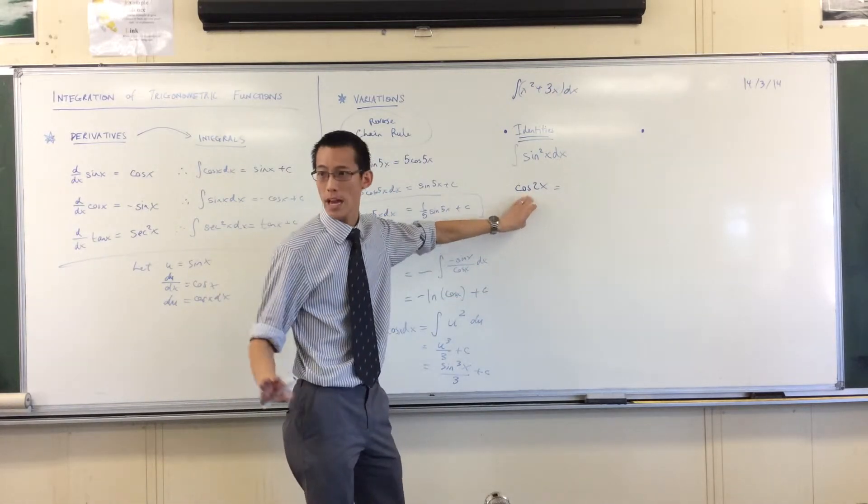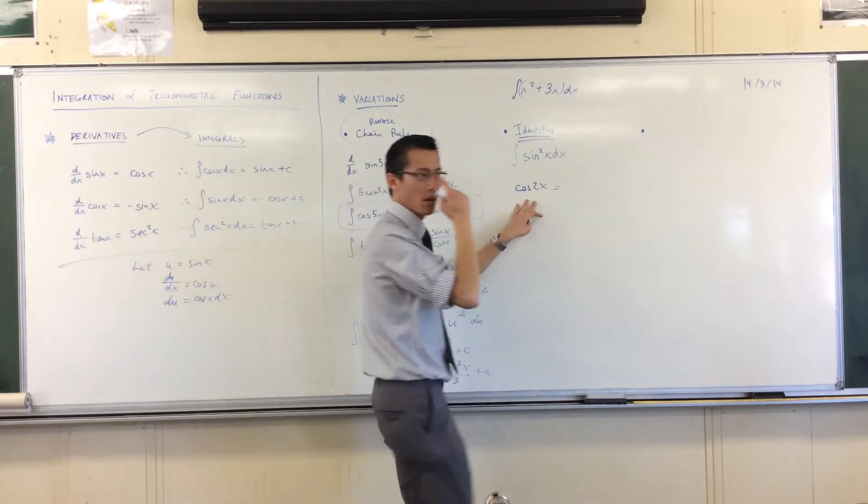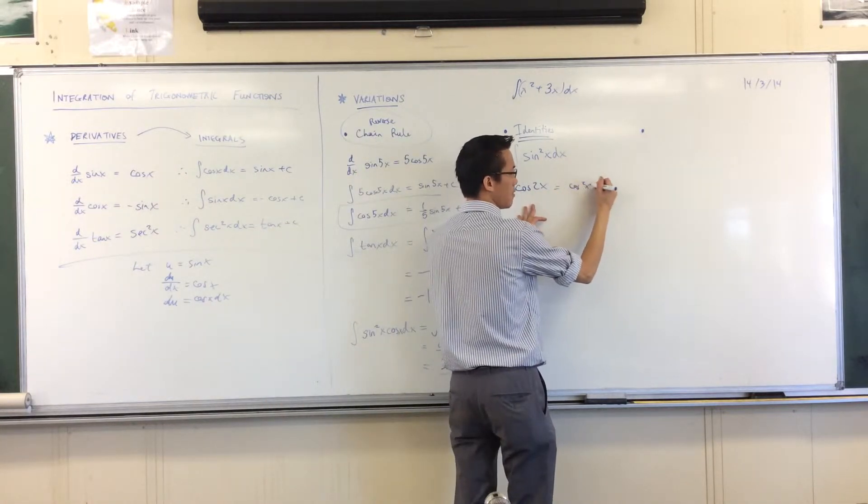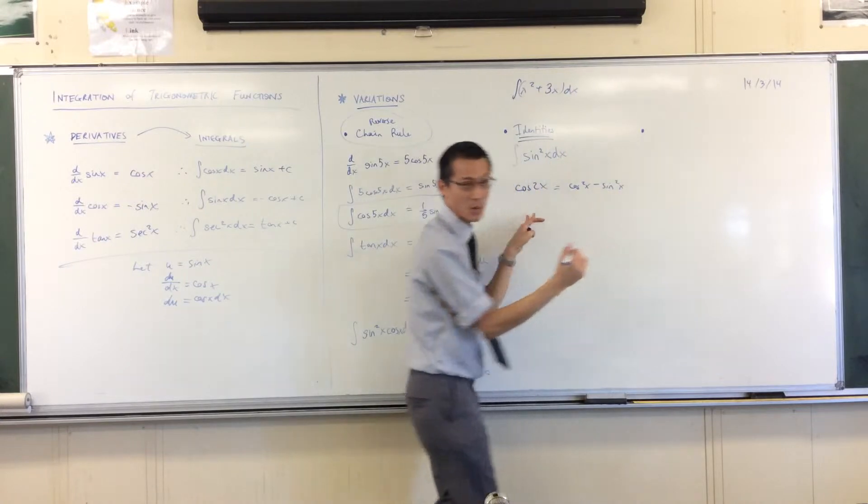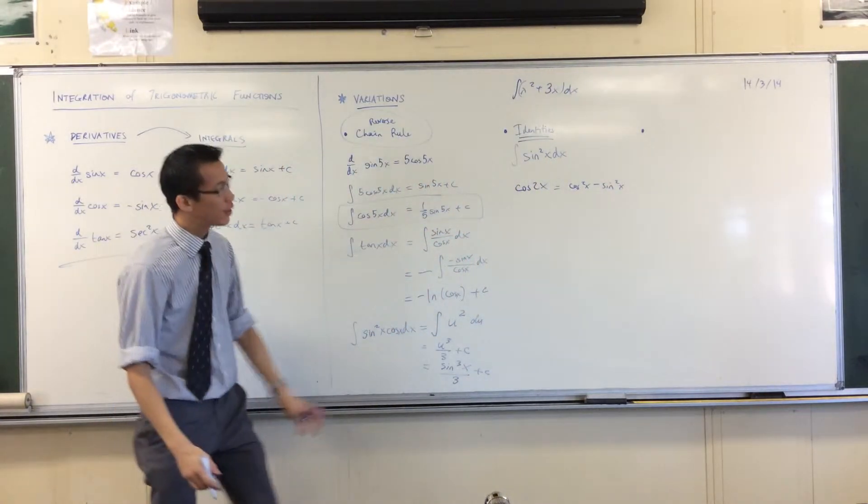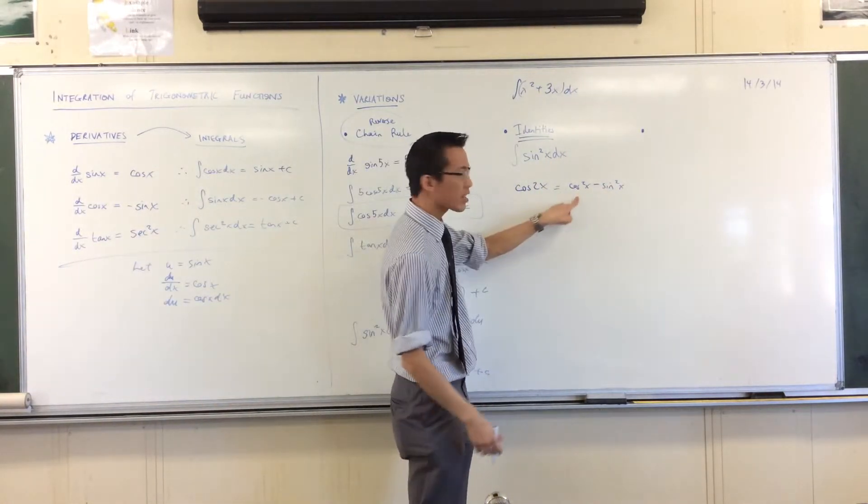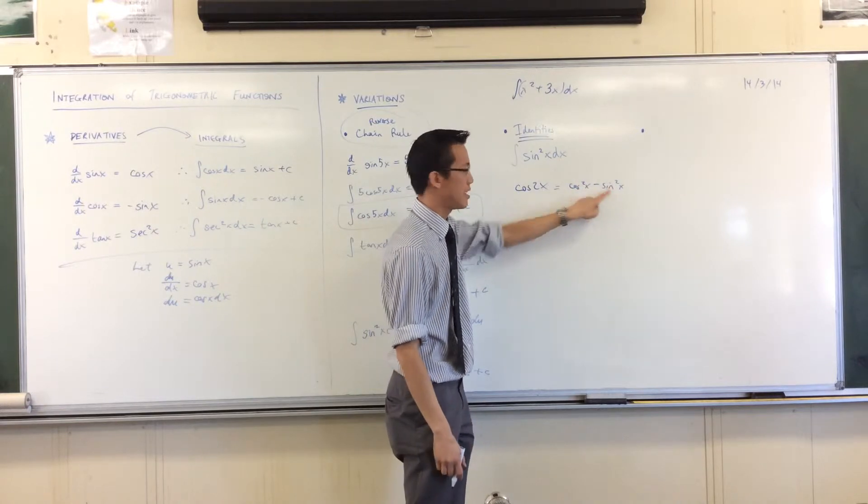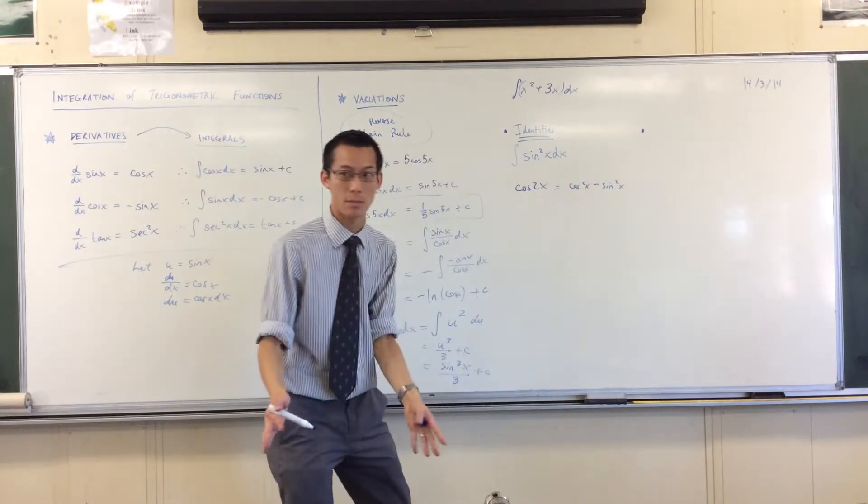What's the normal standard way of expanding this? Cos squared minus sine squared, yes, that's the standard way. But because these are both squares, I can turn either one of these into something else depending on what's more convenient to me.